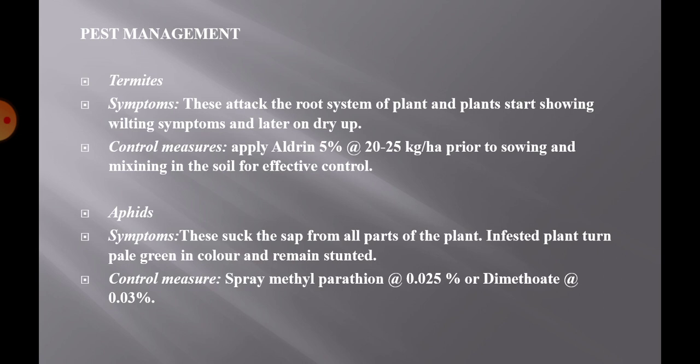Pest management: Termites attack the root system of the plant and the plant starts showing wilting symptoms and later dries up. To control termites, apply Aldrin 5% at the rate of 20 to 25 kg per hectare prior to sowing and mix it into the soil. Aphids are a sucking pest that sucks the sap from all parts of the plant. Infested plants turn pale green in color and remain stunted. To control aphids, spray methyl parathion at the rate of 0.025% or dimethoate at the rate of 0.03%.